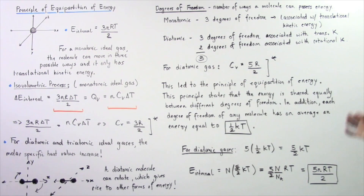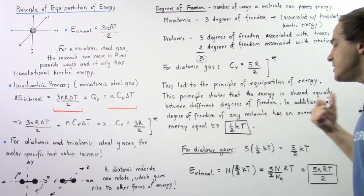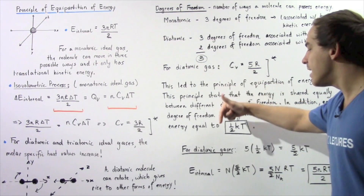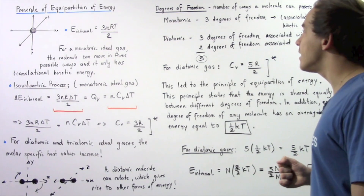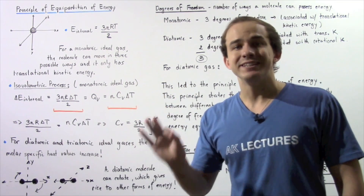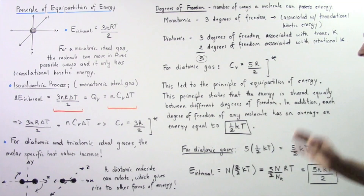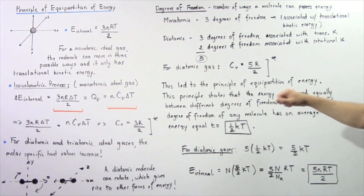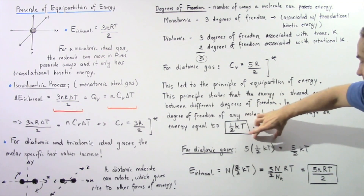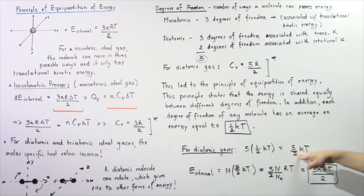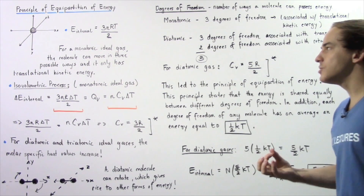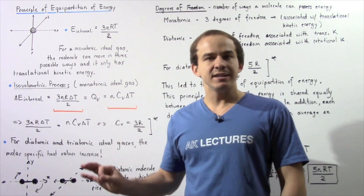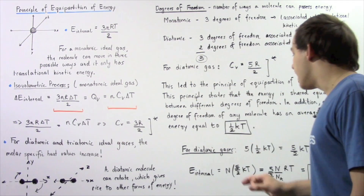For a diatomic ideal gas molecule with five independent degrees of freedom, each contributing (1/2) × k_B × T, the total energy per molecule is (5/2) × k_B × T, where k_B is the Boltzmann constant and T is the temperature in Kelvin. This gives us the amount of energy associated with every single molecule in a diatomic system.